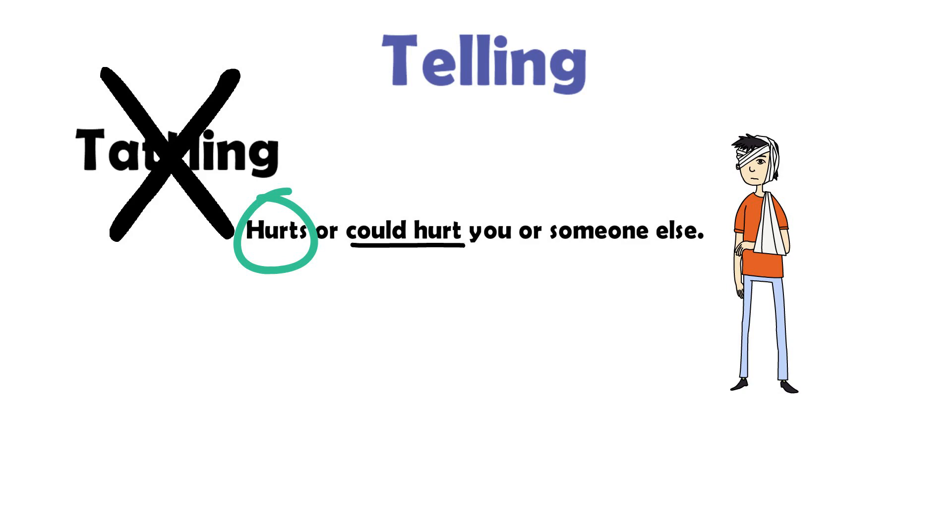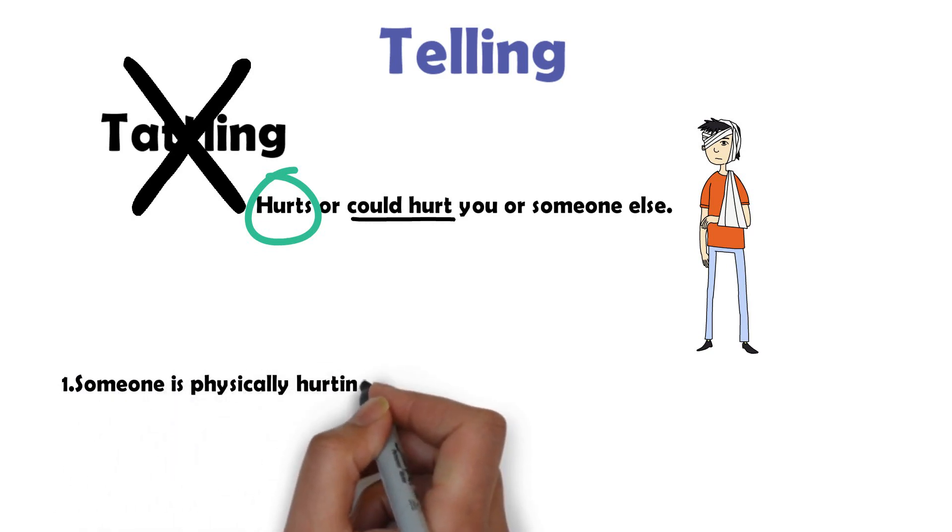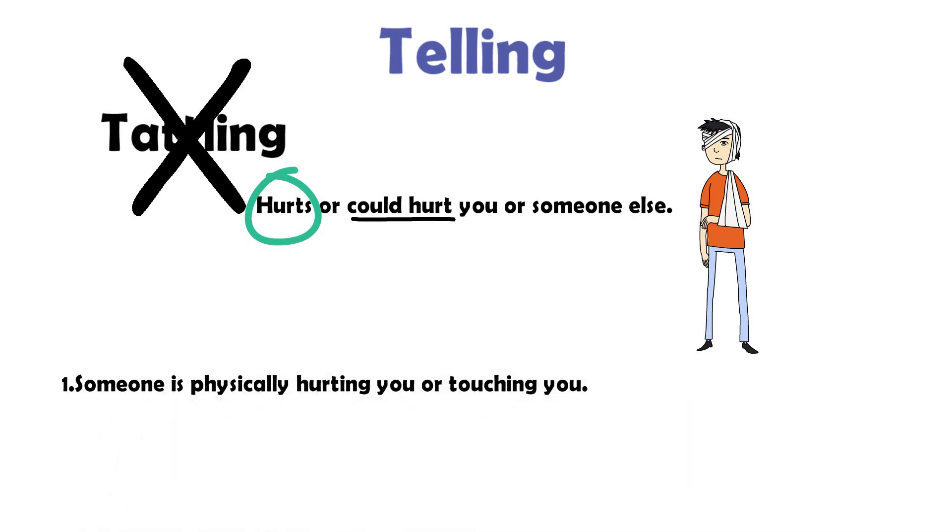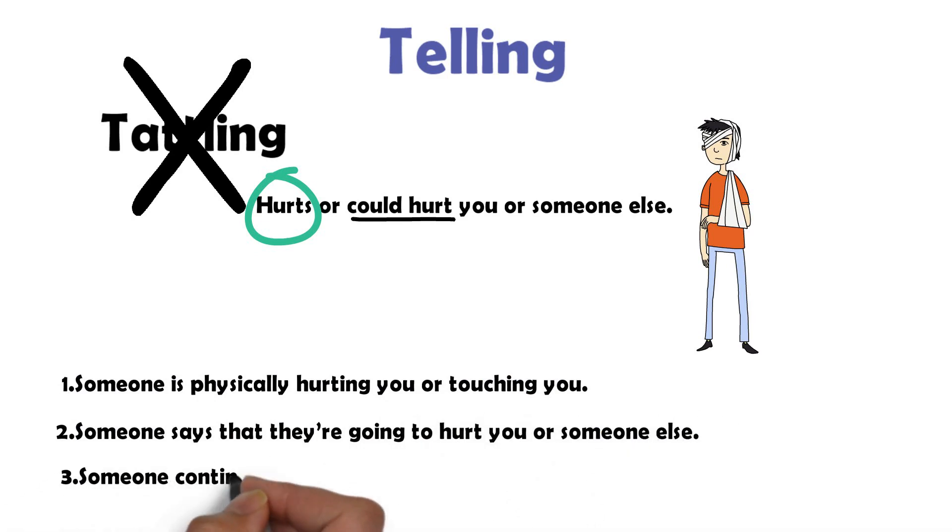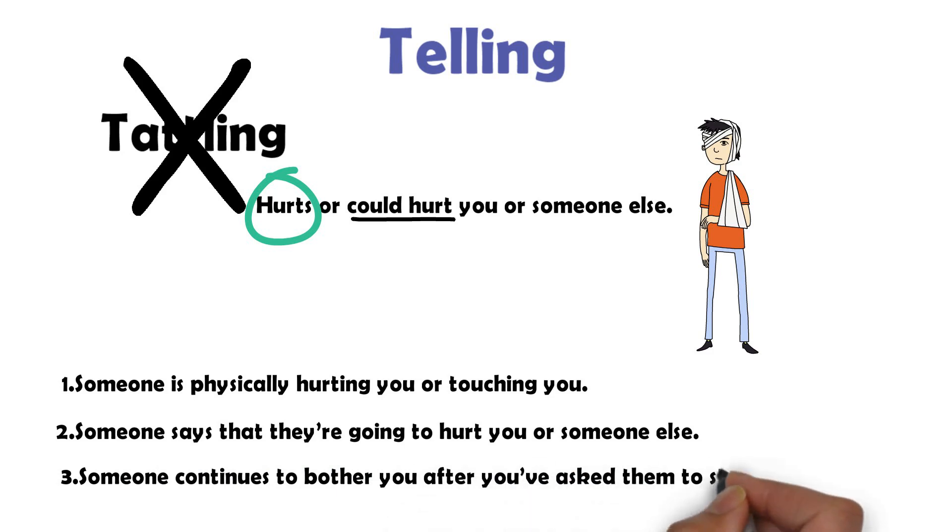Here are a few types of situations where it's important to tell an adult. If someone is physically hurting you or touching you, you should tell an adult. If someone says that they're going to hurt you or someone else or themselves, you should tell an adult. If someone continues to bother you after you have asked them to stop many times and have tried ignoring them, it's probably a good idea to try to get an adult involved in that situation.